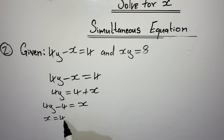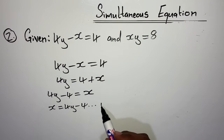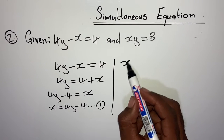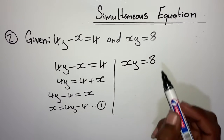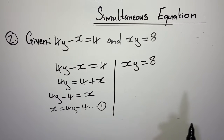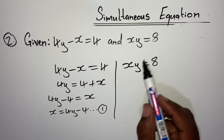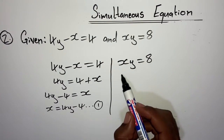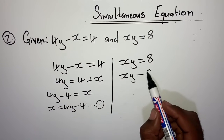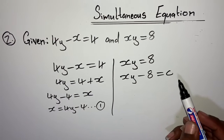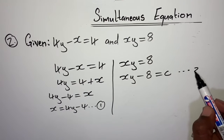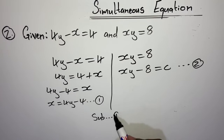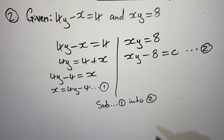To find the x values, we substitute the y values back into our first equation: x = 4y minus 4. Take the first y value, y = 2: x = 4(2) minus 4 = 8 minus 4 = 4. I conclude: when x was 4, y was 2.